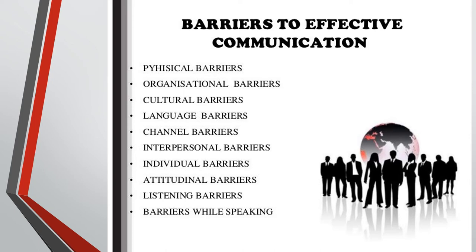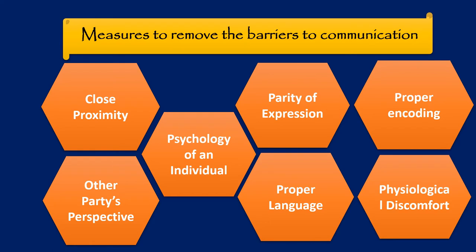These are the many barriers that affect communication between two people or two companies. To remove these barriers, here are some measures. First, close proximity: if departments and sub-departments are in close proximity, problems arising due to physical distance may be reduced. Second, the other party's perspective: one party should make efforts to view things from the other party's perspective so that perceptual differences can be minimized.